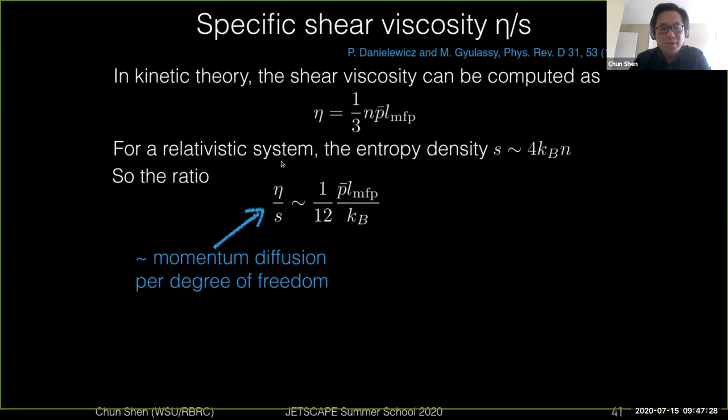However, in the relativistic heavy-ion collisions, number density is not conserved because you can have pair production of particles. So it's better to translate these particle densities into entropy densities using thermodynamic relations.